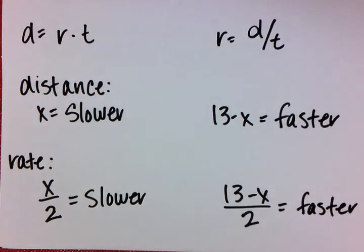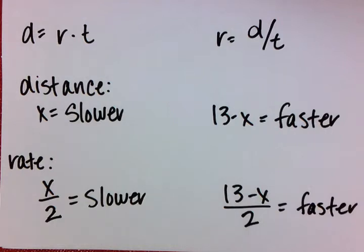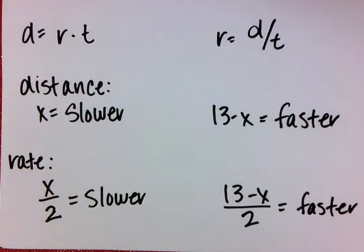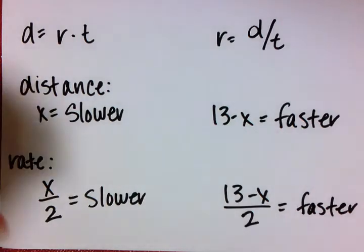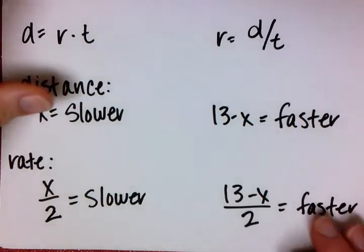Let's convert those distances into rates. We know that rate is distance over time, and the time for each hiker is two hours. So we get x over 2 for the slower hiker's rate, and 13 minus x over 2 for the faster hiker's rate.